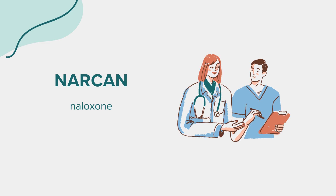People often ask if Narcan can harm someone if given in error, suspecting an opioid overdose when there isn't one. The answer is no — Narcan will not cause harm if opioids are not present in the body. It specifically targets opioid receptors and has no effect in the absence of opioids.